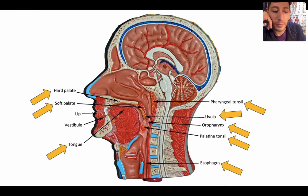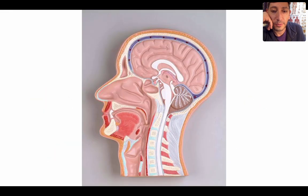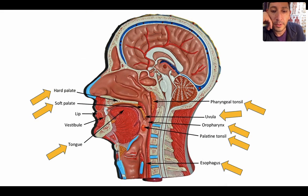We've looked at this model several times during respiratory and with the bones, and now we're looking at it for the digestive system. You've got the tongue, the hard palate — the white part — and the soft palate — the red part — right here. And then down here this is the uvula.